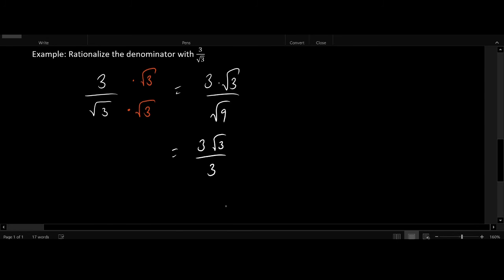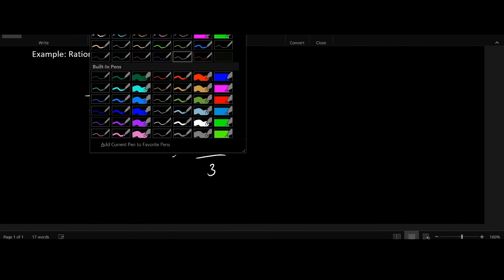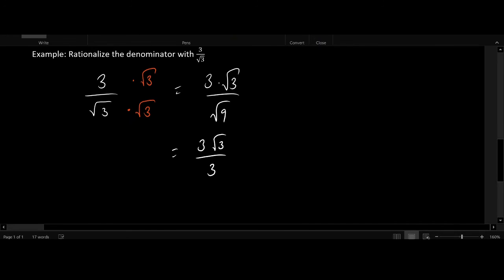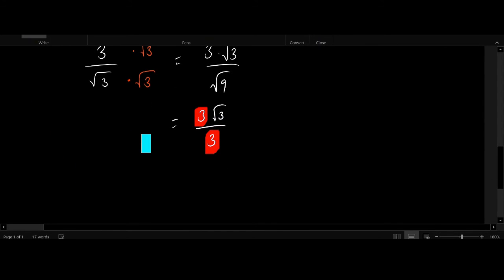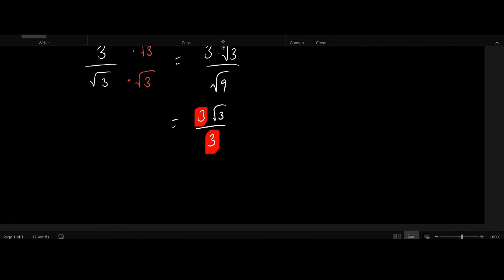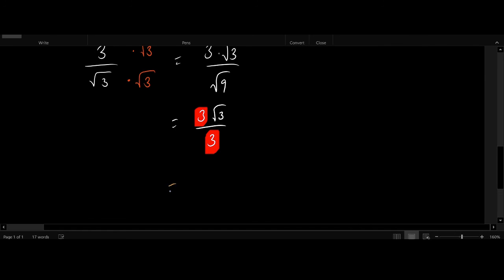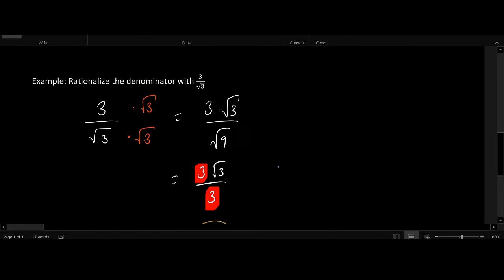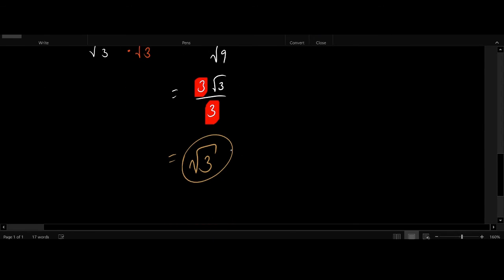Now at this point we have technically finished rationalizing the denominator, but we are a little bit lucky now because that 3 in the top and the bottom can be cancelled out. And that leaves us with something which I think is objectively much simpler than it was before, square root of 3 by itself.